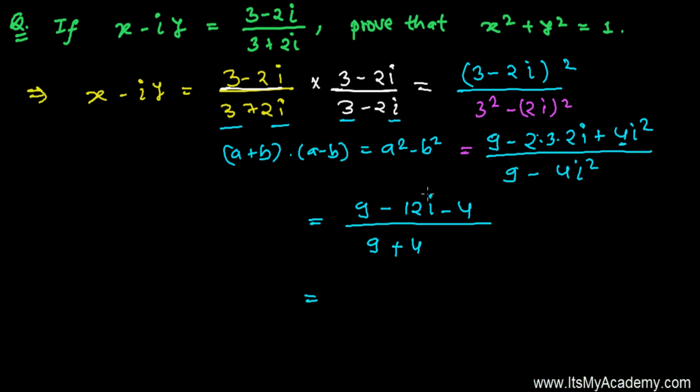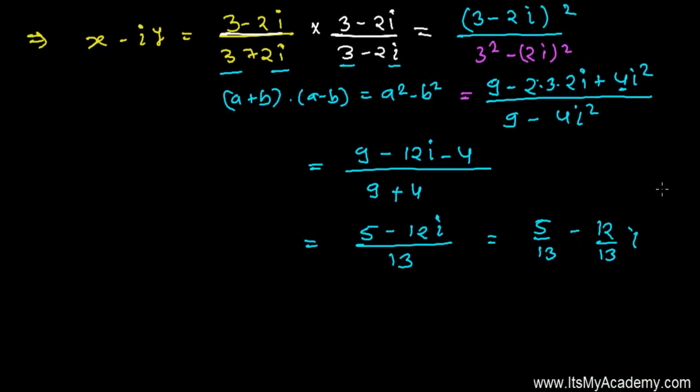It's going to be (5-12i)/13. So it's going to be 5/13 - (12/13)i. So I'm going to write it a little properly. So x - iy = 5/13 - (12/13)i.